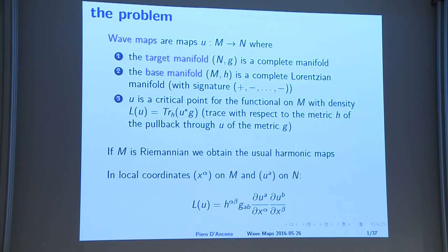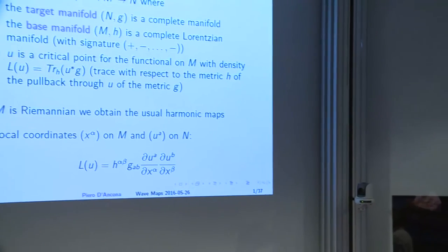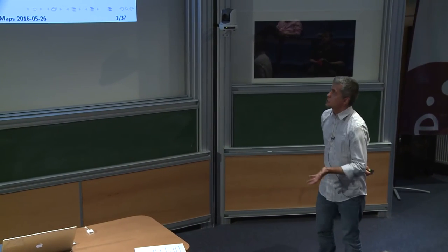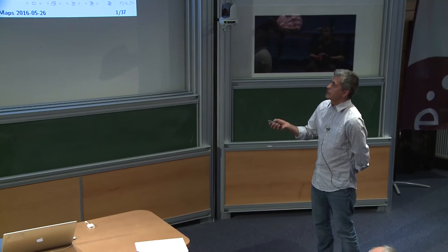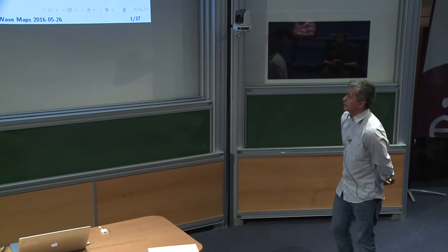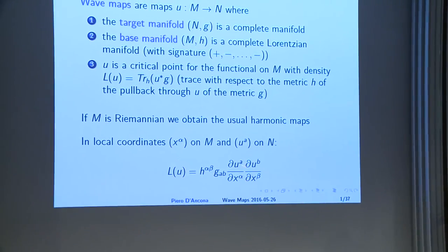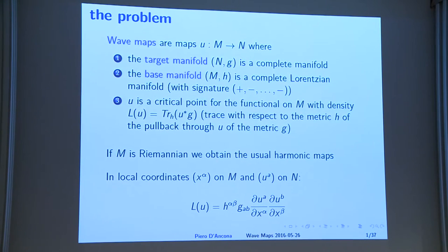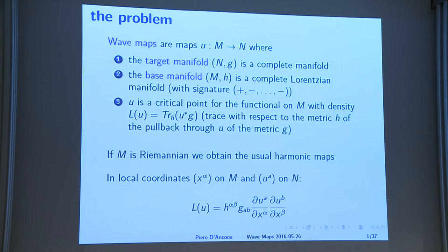This is a very weak notion of wave map — it's a critical point for some Lagrangian. The Lagrangian density is the trace in H of the pullback of the metric G. In coordinates it's very easy to see that it is a quadratic thing in the derivatives. Since the signature of H is hyperbolic, this is a hyperbolic-looking equation. The easiest way to feel the equation is to think of it as a hyperbolic version of the harmonic map equation.